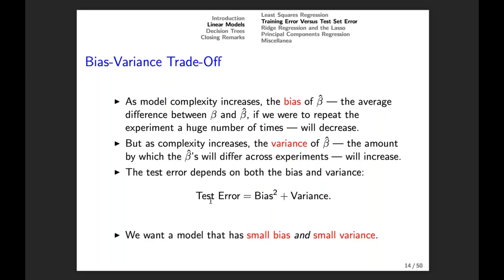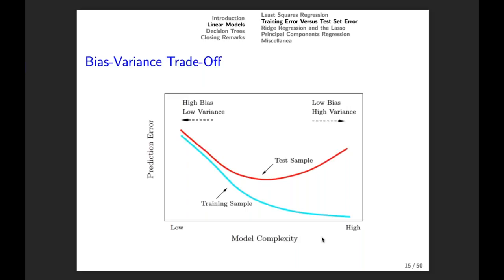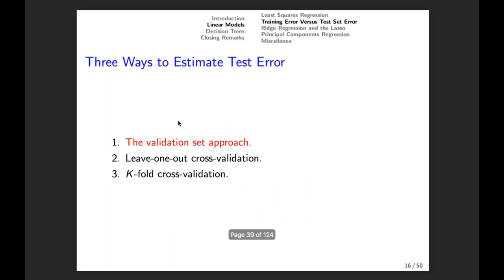We need a model with small bias and also small variance. You can see this bias-variance trade-off in a picture: model complexity from low to high is on the x-axis, error is on the y-axis. Training error in blue is monotone decreasing in model complexity, but test error in red is not. The smallest test error happens at an intermediate level of model complexity. As you get a more complex model, bias is decreasing but variance is increasing.